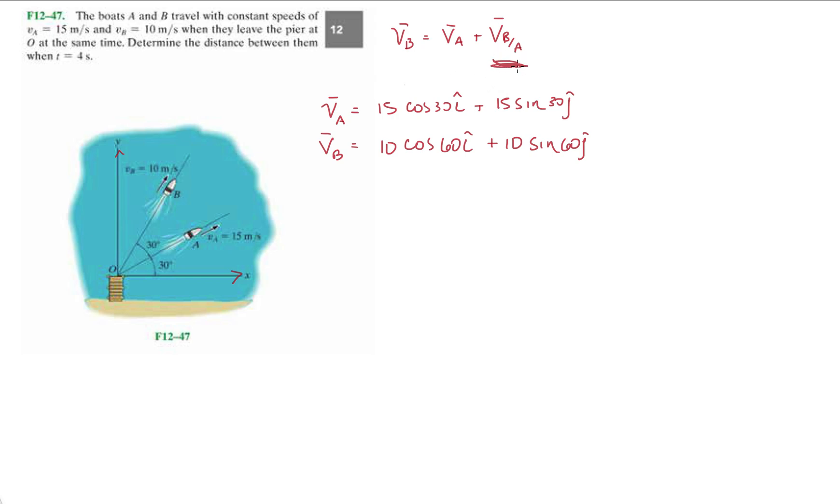Now if you want to determine the distance between them, we can just calculate what the velocity, the relative velocity between them is, and then just use a basic equation. Since it's constant speeds and they're not accelerating, we can use x_f equals initial position plus some velocity times t. You can only use this one if you're using constant velocity, constant speed. There's no acceleration involved.